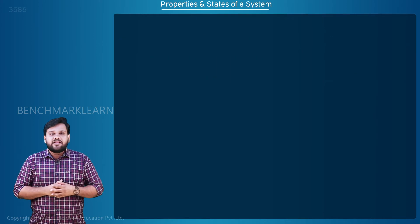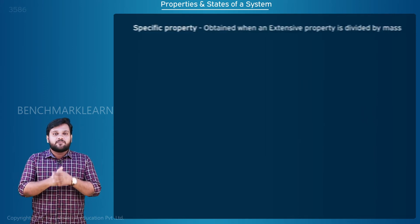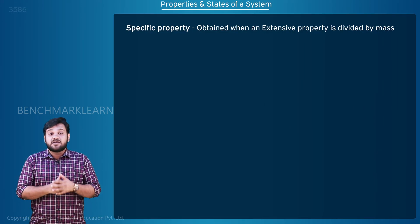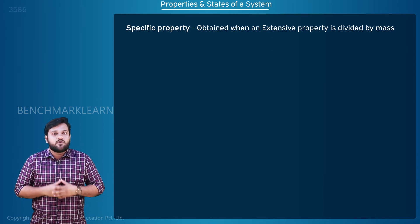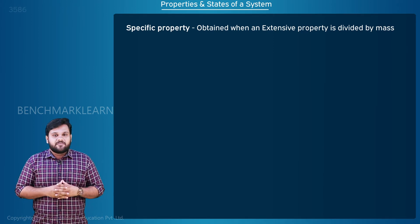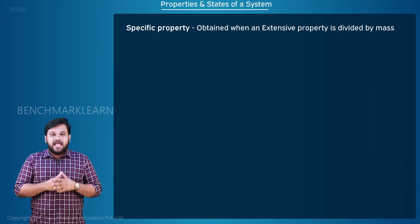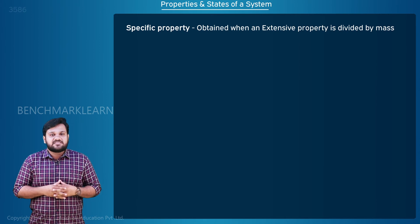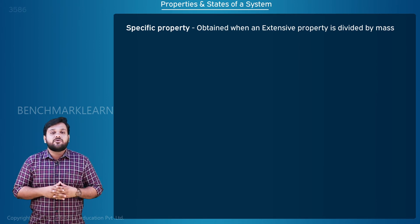There is a type of intensive property called specific property. When we divide an extensive property by mass of the system, we get the corresponding specific property. For example, if the volume of a system having mass m is V, then the specific volume of a system is the volume per unit mass.